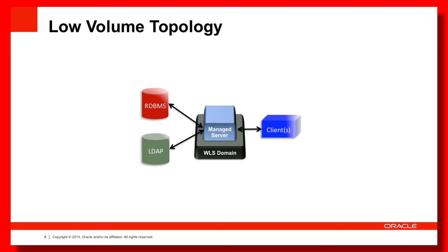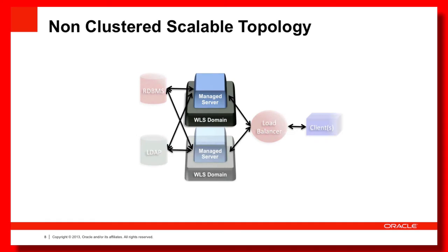There are going to be some customers who do have a need for failover, or at least their system should be up 24 by 7. Failover and high availability exist on a sliding scale — there isn't a simple yes or no answer. One solution is a non-clustered scalable topology where you have two managed servers fronted by a load balancer. When the load balancer detects one managed server goes down it redirects client requests to the other. In this case there is no state failover between the two separate managed servers, and some customers are quite fine with this.